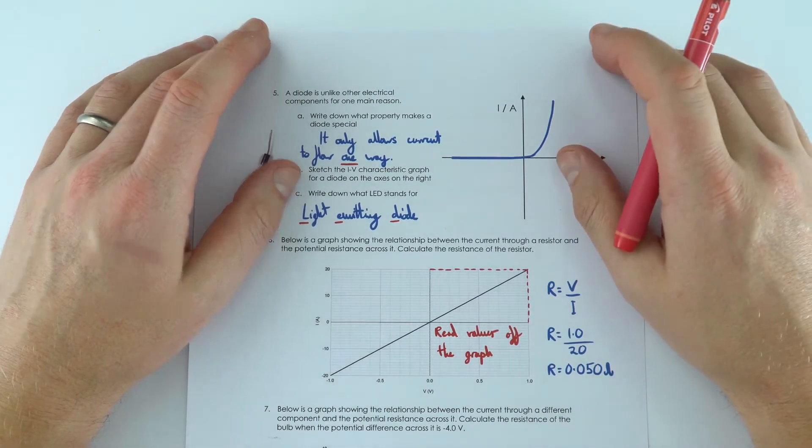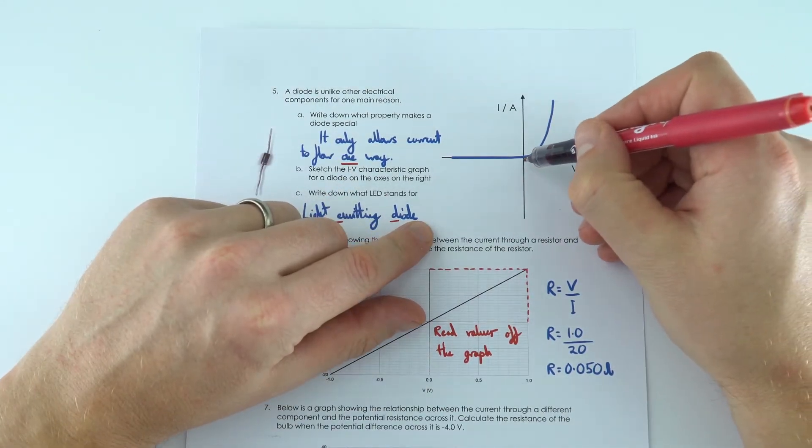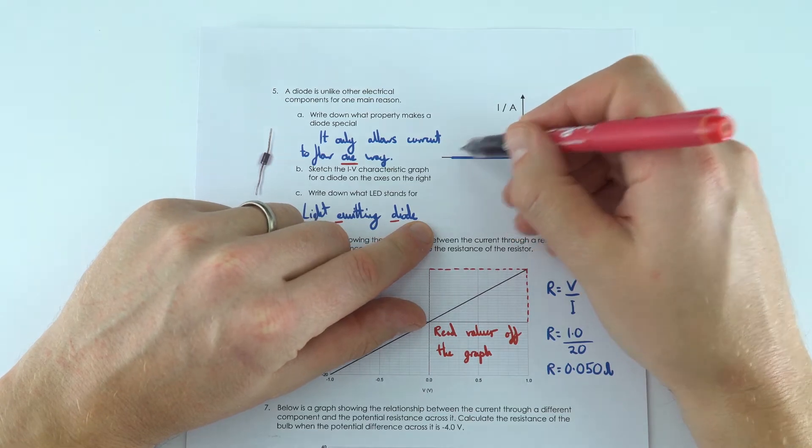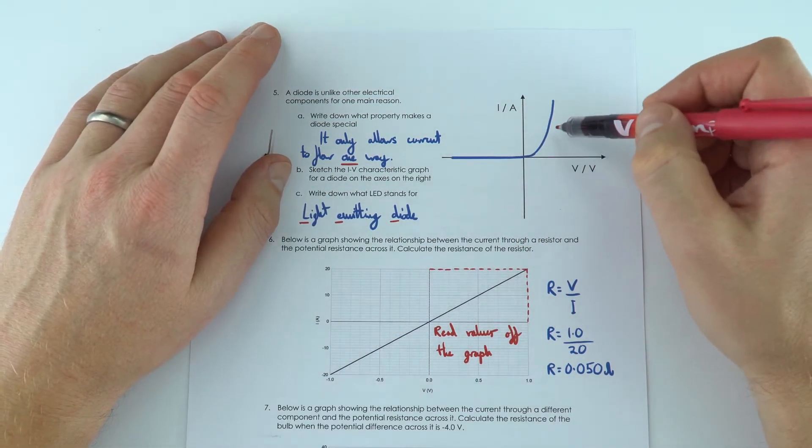We then look at diodes, which only let current flow one way in the circuit, which is why when you've got a negative value of potential difference, we have no current flowing. So again, this is the shape that you should be familiar with.